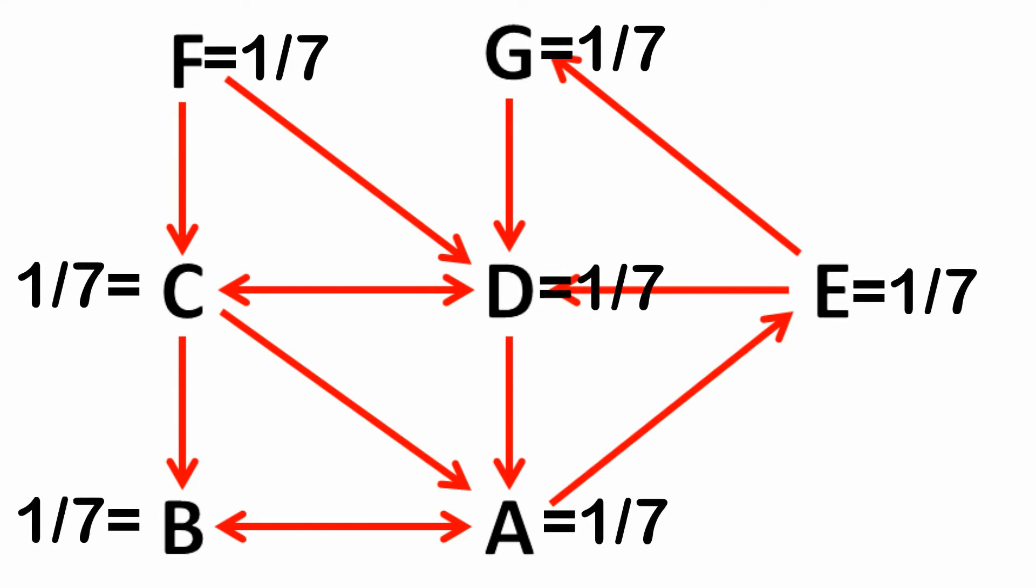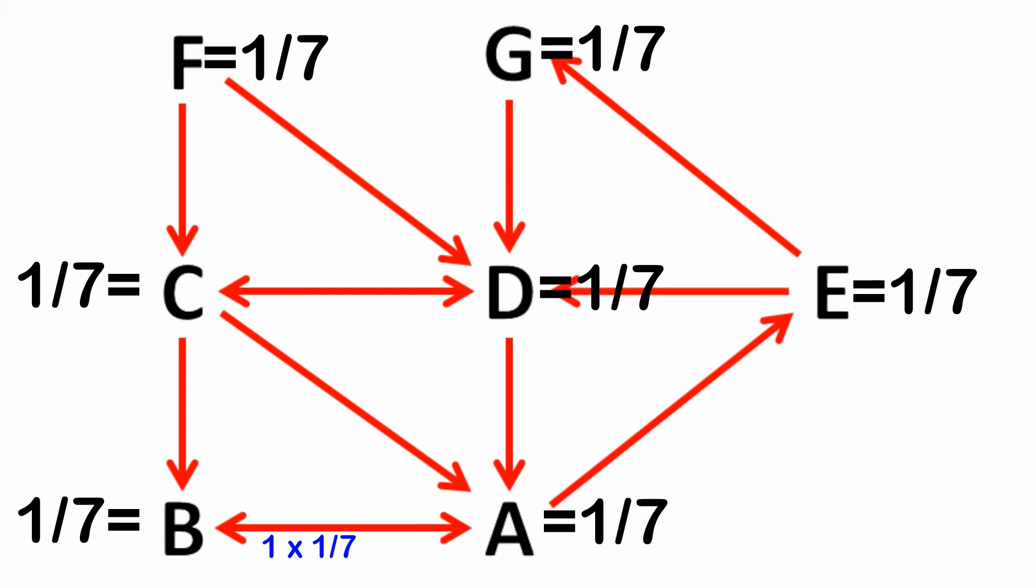So now let's work out A's importance ranking. A obviously doesn't link to itself, so it gets zero importance from A. B only links to A, nowhere else. So A should get one times one-seventh importance from B. In effect, what we're saying is that all of B's importance should flow through to A.